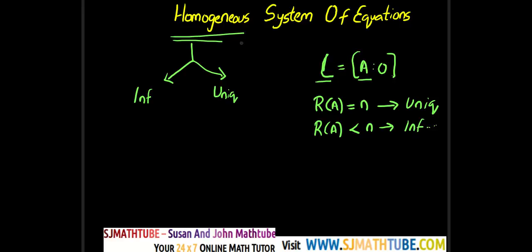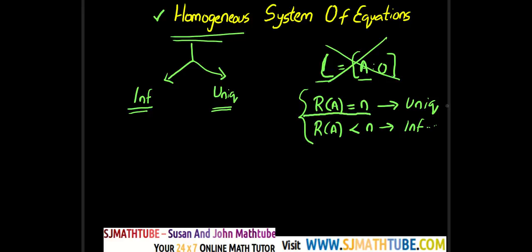Every homogeneous equation will be consistent — it might have infinite solutions or it might end up with unique solution. The second point: here we are not going to write the augmented matrix. We will simply use A itself because rank of A equals rank of C, so the augmented form doesn't make much sense. The conditions are: if rank of A equals n, there will be unique solution; and if rank of A is less than n, there will be infinite number of solutions.